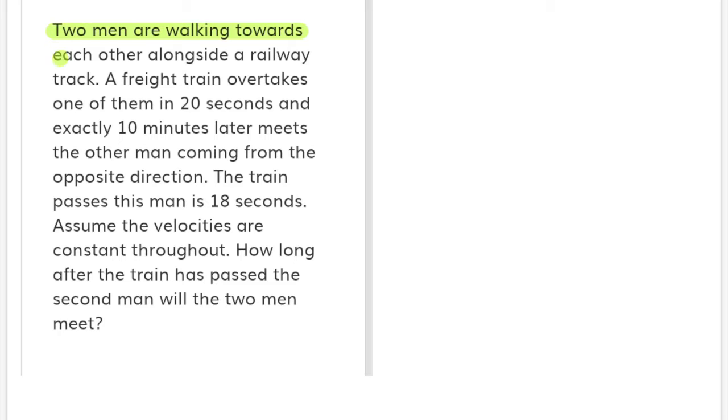Two men are walking towards each other alongside a railway track. A freight train overtakes one of them in 20 seconds. Exactly 10 minutes later, the train meets the other man coming from the opposite direction. The important word here is overtake.